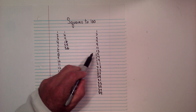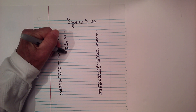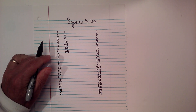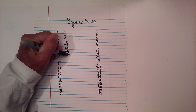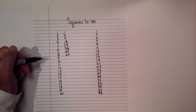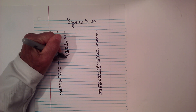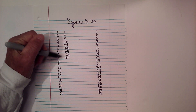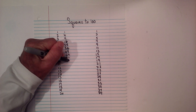The square of 7 is 13 plus 36, which is 49. For 8, I take 15 plus 49, and that is 64. For 9, I take 17 plus 64 — and you're beginning to see the pattern — that's 81. For 10, it's 19 plus 81, and that is 100.